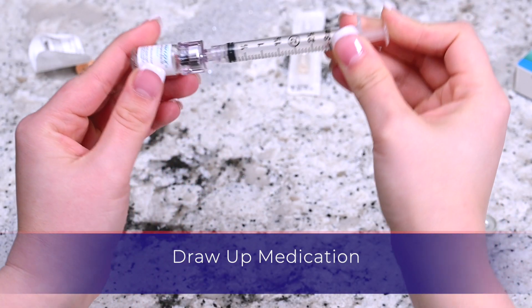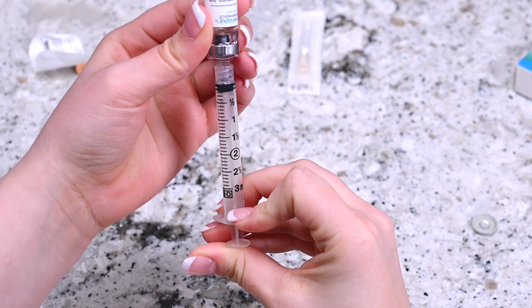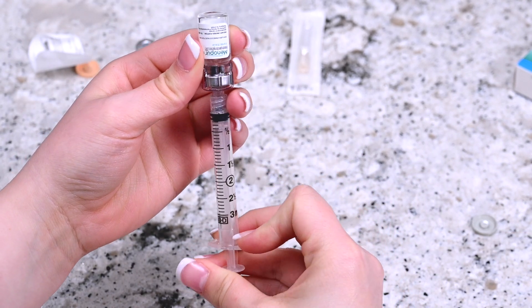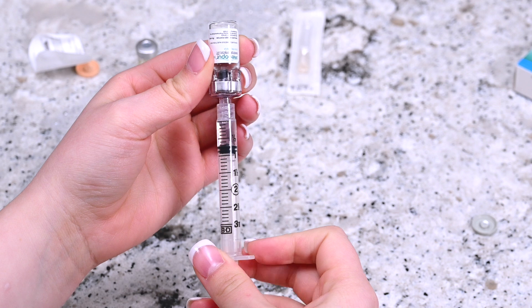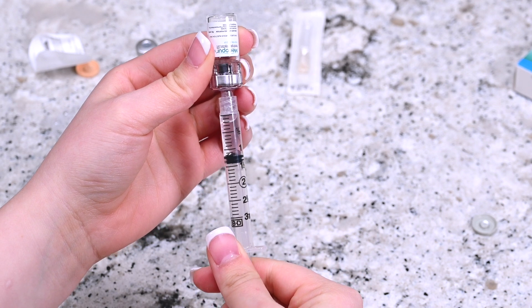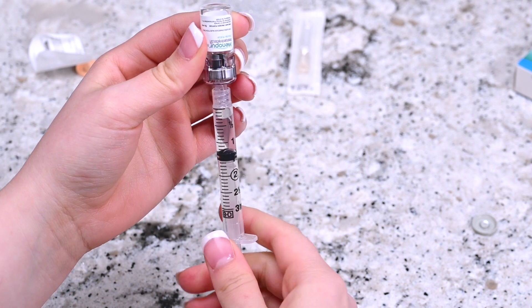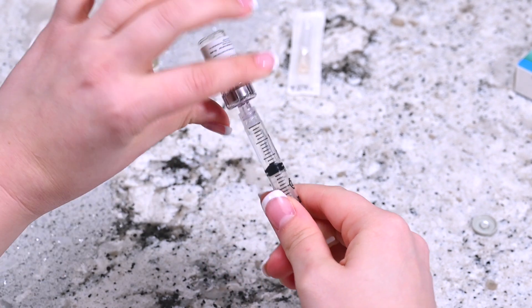Invert the syringe without removing it from the vial and pull the plunger back until all the contents from the vial transfer to the syringe. Once finished, remove the syringe from q-cap and the vial and set it aside.